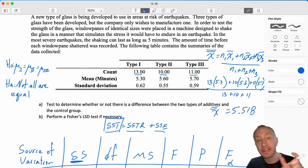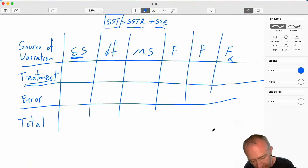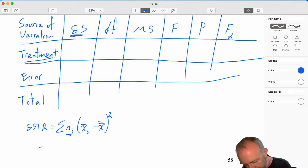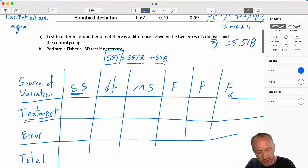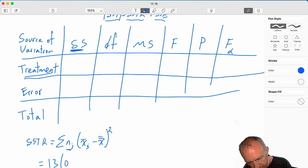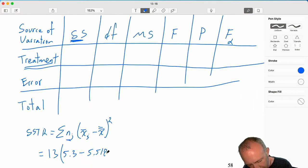Now we've got that first intermediate step taken care of. Now we can go ahead and calculate SSTR. SSTR, here we're looking at the sum across those differences between sample means and the grand mean, squared, and here we are multiplying through by the sample size. So the first one, our sample size was 13 times that mean, 5.3, and the grand mean, 5.518, squared.